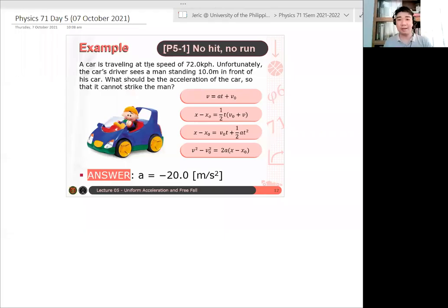This one, okay. So here's an example, here's our first example for this session. A car is traveling at the speed of 72 kph. Unfortunately, the car's driver sees a man standing 10 meters in front of his car. What should be the acceleration of the car so that it cannot strike the man? I'll be giving maybe a minute to think of how to solve this problem, just an approach then.